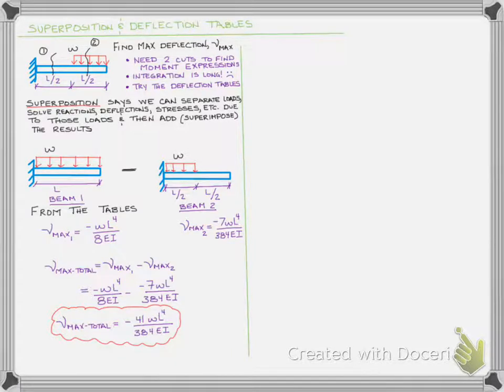But you as the engineer, you as the solver, have to be savvy enough to say, okay, what loads can I combine and how can I combine them? And we did really still end up adding these together because we had a negative and a negative. That's one example that we could do.